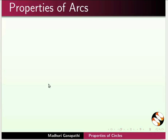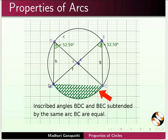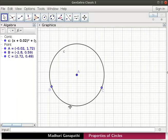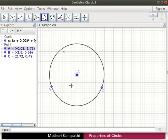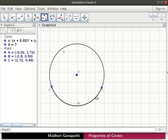Next, let us prove a property with respect to an arc. Inscribed angles BDC and BEC subtended by the same arc BC are equal. Let us draw an arc. Click on the circular arc tool. Click on point A. Then click on points B and C on the circumference. An arc D is drawn.